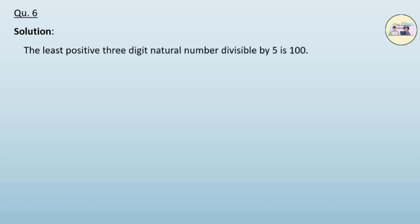Question 6. Find how many 3-digit natural numbers are divisible by 5. Solution. The least positive 3-digit natural number divisible by 5 is 100. That is, our a is 100.